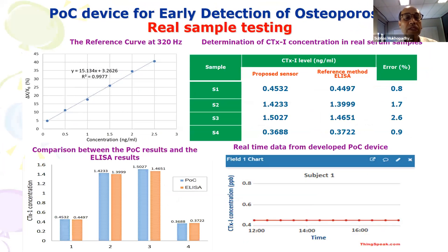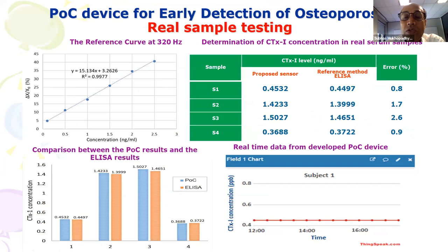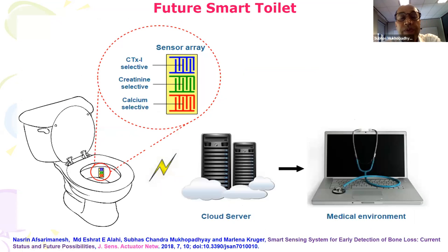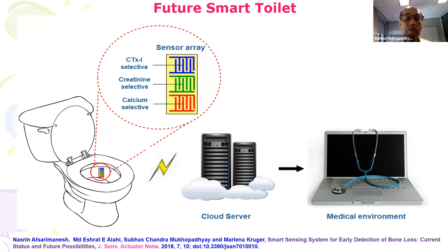The sensor we have developed can upload data to the internet so the doctor doesn't need to see the patient in person — the doctor will get the result from sensor data uploaded to the cloud because of IoT applications. One of our dreams is that if we can make sensors with a sensor array, it may be possible to detect from urine rather than blood. We are looking into making a sensor for that. The sensor needs to be very robust, which is why it's very challenging, but we are working on it.